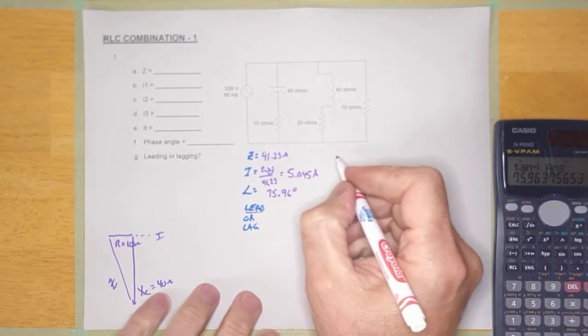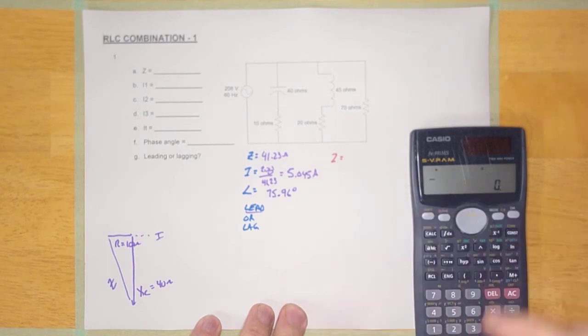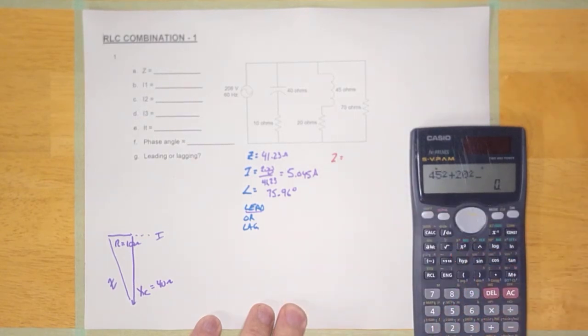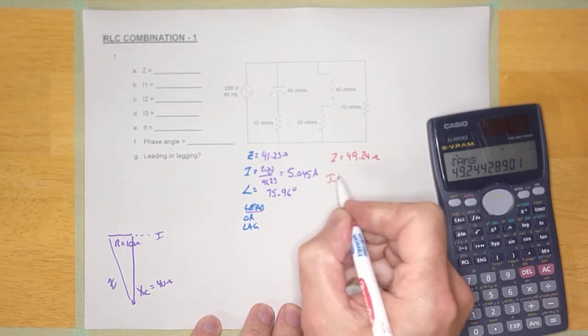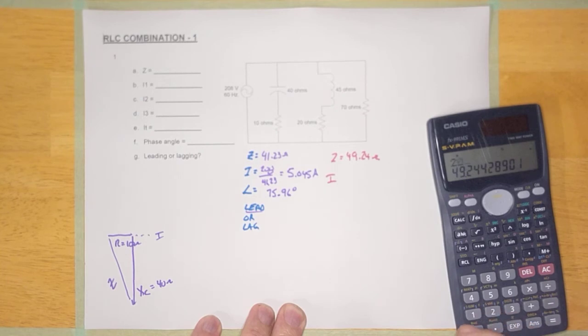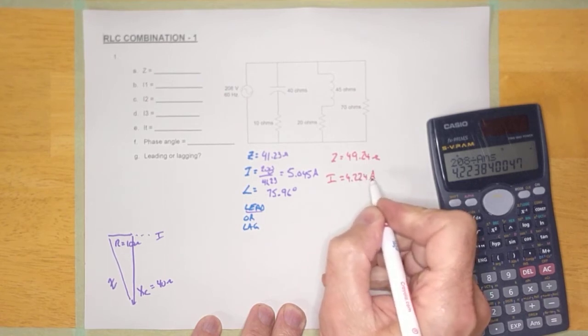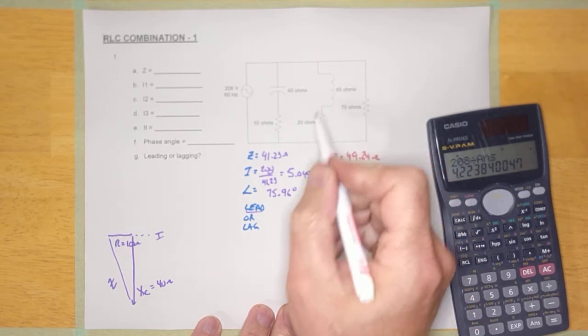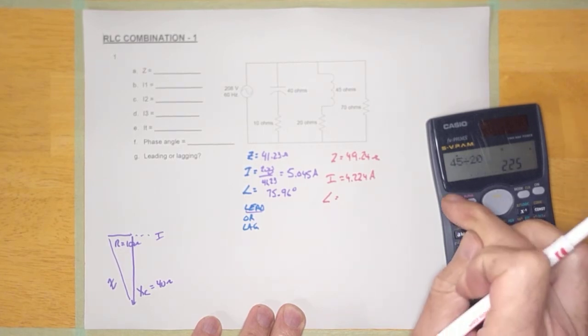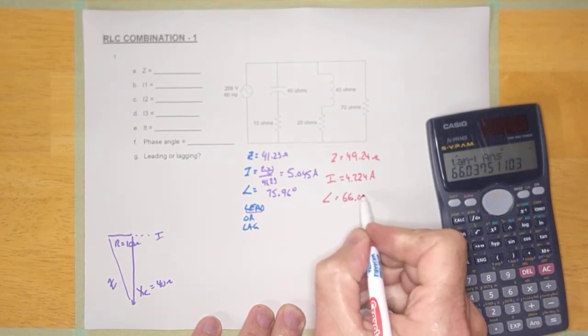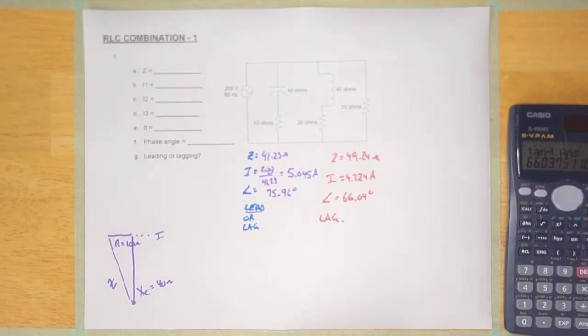So let's do the second rung here. This is rung number two. The impedance is going to be, we'll go a little faster now. 45 squared plus 20 squared equals root equals. Looks like that is 49.24 ohms. The current is going to be 208 over that. So it's going to be 208 divided by that answer. It's going to be 4.224 amps. And the phase angle, opposite over adjacent inverse tan. So it's going to be 45 over 20. 45 divided by 20 equals shift 10 equals 66.04 degrees. And this one's going to lag. And I know it's going to lag because it's an inductor.